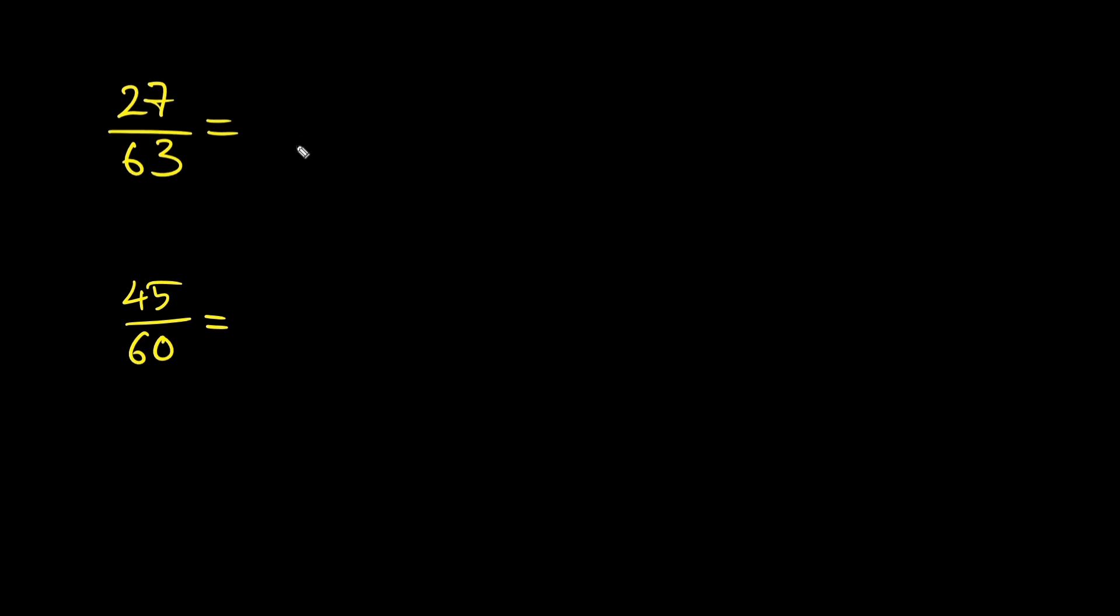For 27 over 63, we do not have even numbers so we will not try dividing by 2. But both numbers are divisible by 9. 27 divided by 9 is 3. 63 divided by 9 is 7. So the answer is 3 over 7.